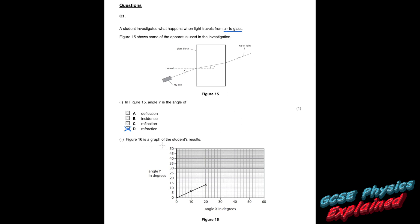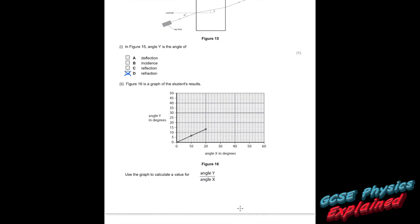Part 2. Figure 16 is a graph of the student's results. They've got angle Y up the side in degrees and angle X in degrees along the bottom. Use the graph to calculate a value for angle Y divided by angle X. So you'd literally just take the angle Y, that's 14, and divide by the corresponding angle X which is 20. So 14 divided by 10 would be 1.4, and then divide that by 2, so that's 0.7.